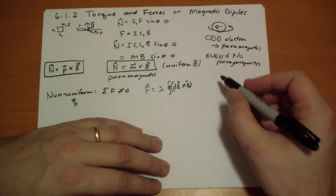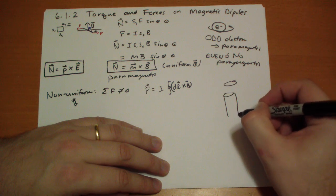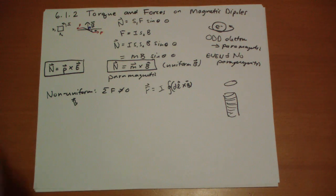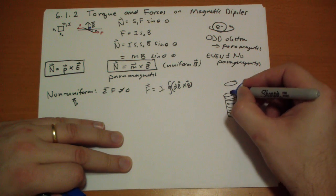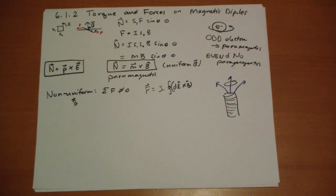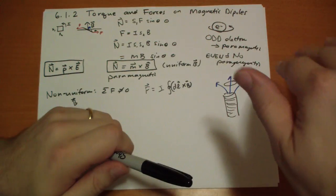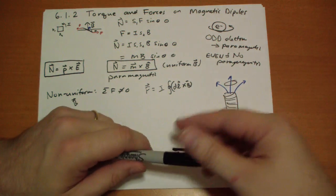If you take a loop and you have a solenoid, the magnetic field at the end of the solenoid spreads out like a flower. The magnetic field there is non-uniform. If you think about the parts of the loop when the current is traveling into the page, you get a QV cross B — a force pointing a little bit inward and downward.